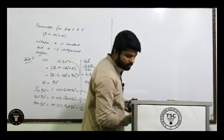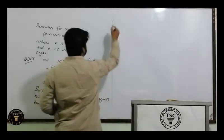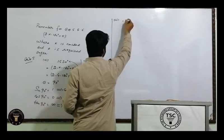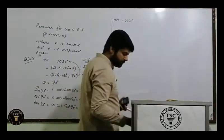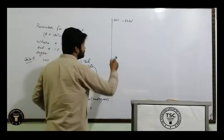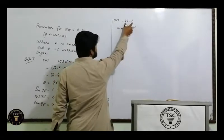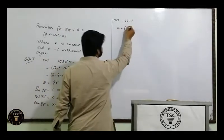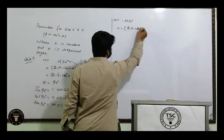Next, ek aur part — 7th part: minus 2430. Minus aa gaya ismein. No problem — minus as it is chor dein aur angle ki jagah yahi formula apply karna hai: 2·k·180 + θ. Bahar minus hai, jab bracket open karenge toh sign change ho jaayega: minus θ ki jagah blank chor dein.